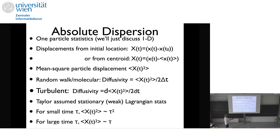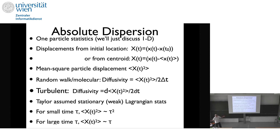For us oceanographers, based on the work of G.I. Taylor in the 1920s and people after him, we define diffusivity as (1/2) d/dt of the mean squared displacement. So that's our definition of diffusivity — if I calculate that I get a diffusivity coefficient.